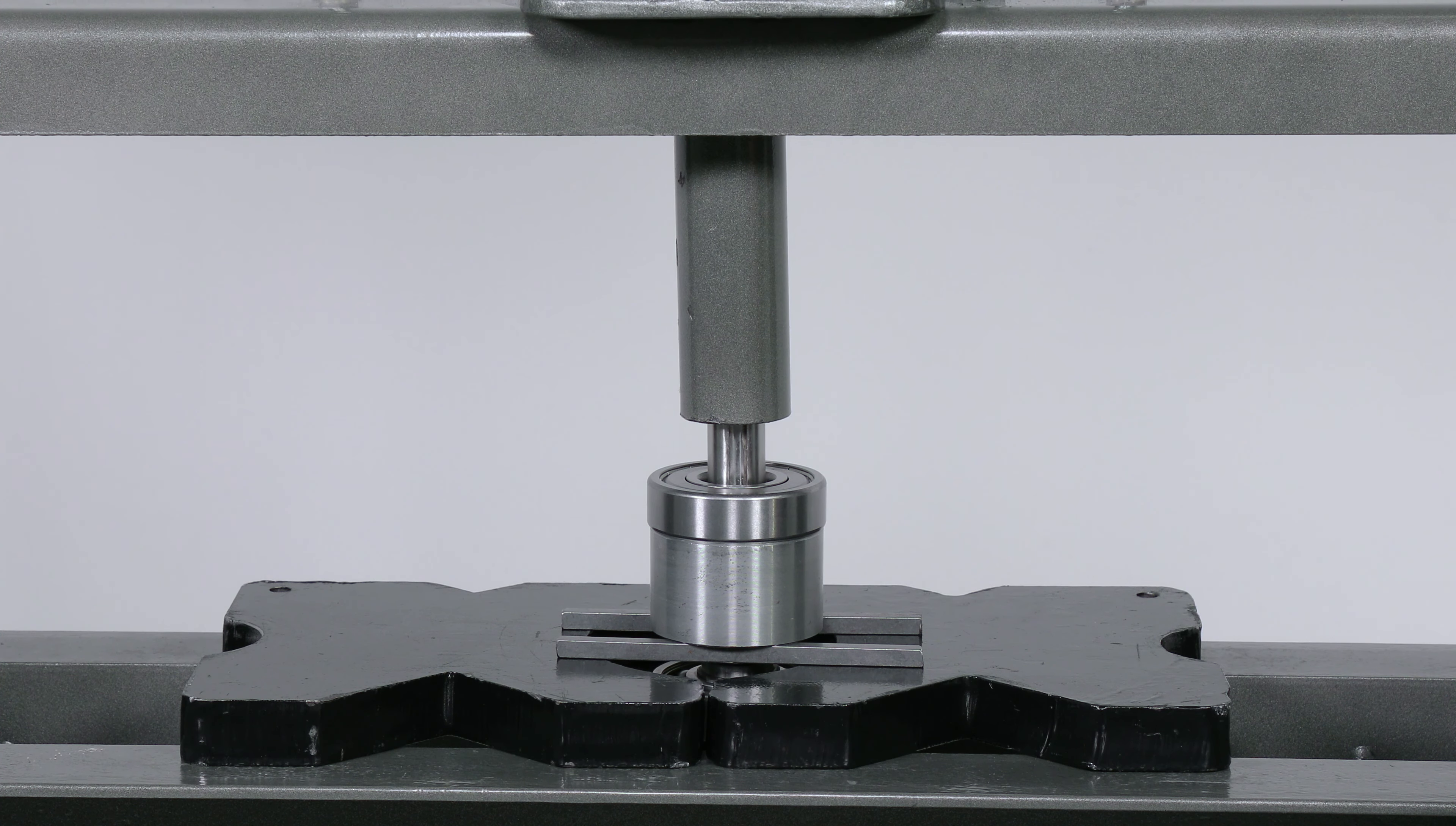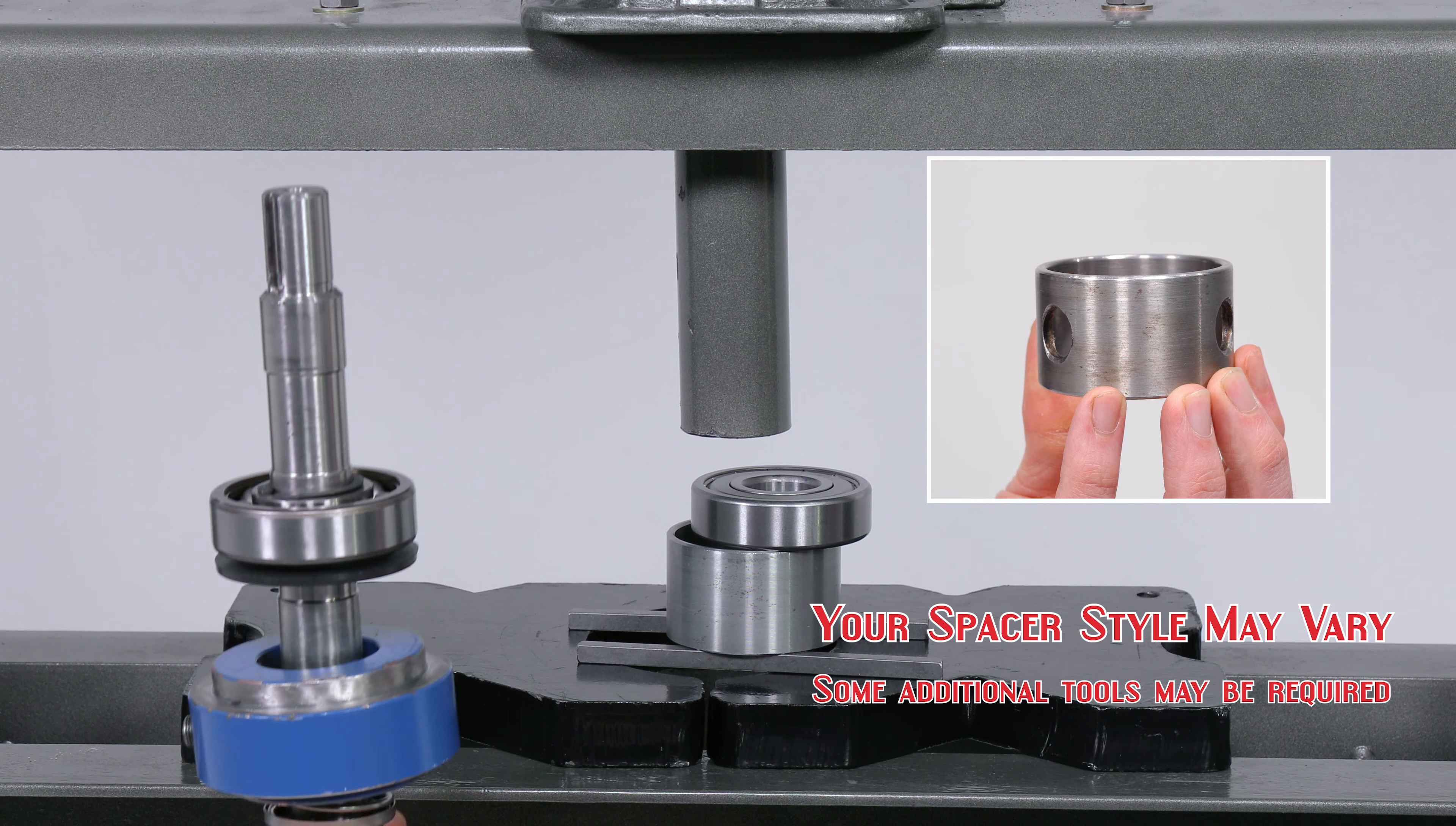If using a ported spacer, put the drive shaft in a vise with the keyway facing up and use a jaw puller to remove the top bearing and ported spacer.